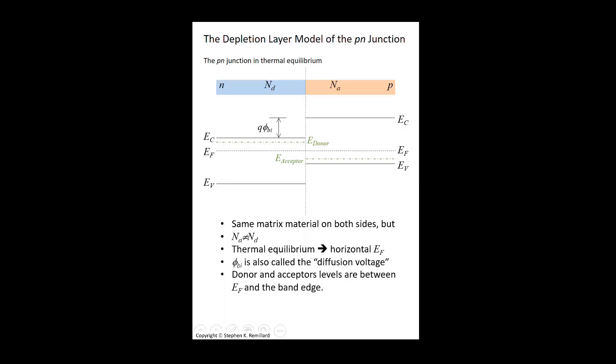Once acceptors and donors become ionized, they have a charge. Donor atoms give up an electron, so they become positive ions. Acceptor atoms take on an electron, so they become negative ions.